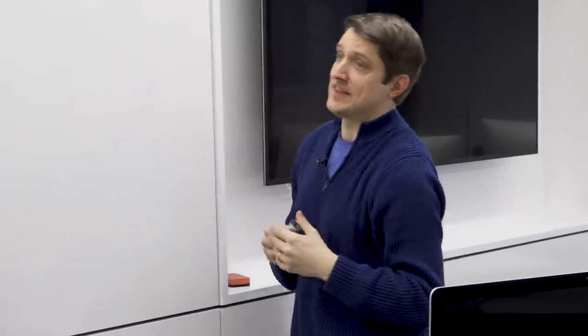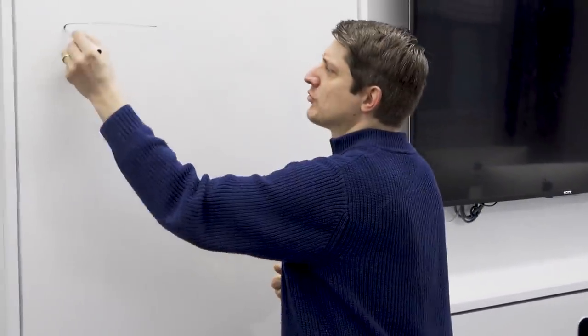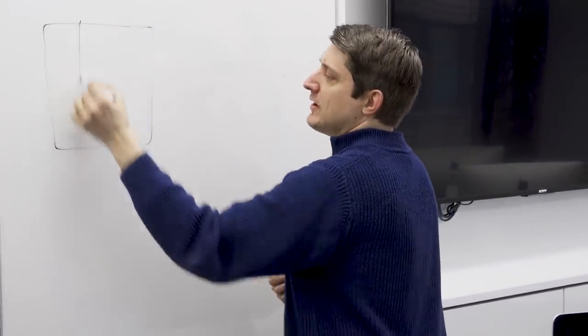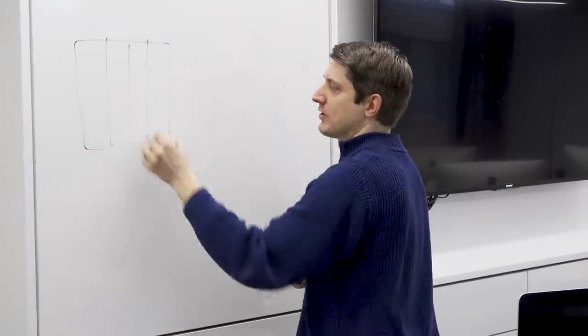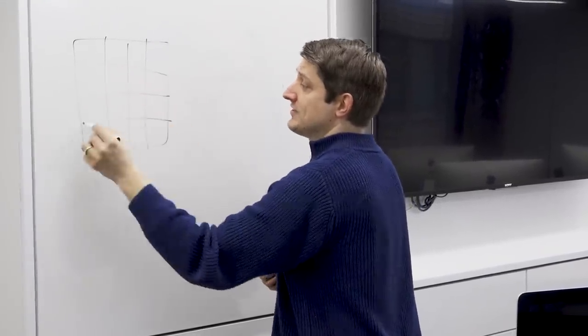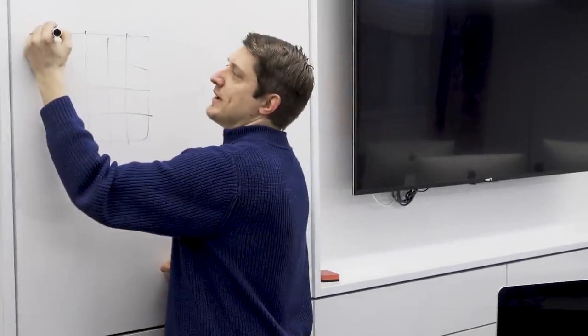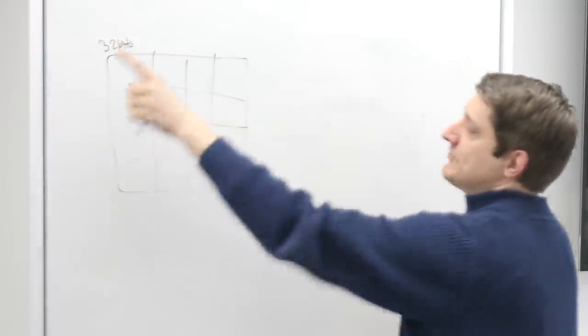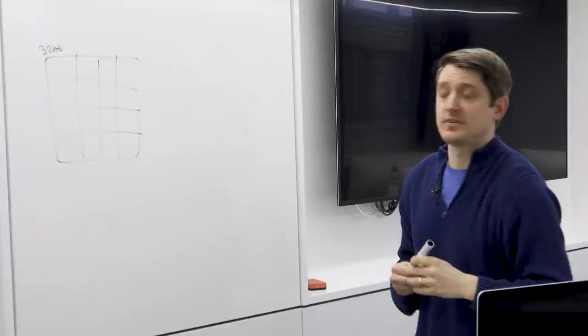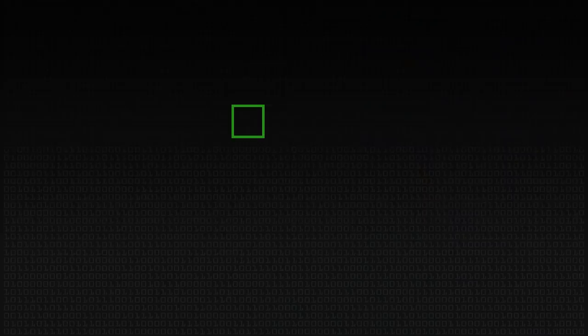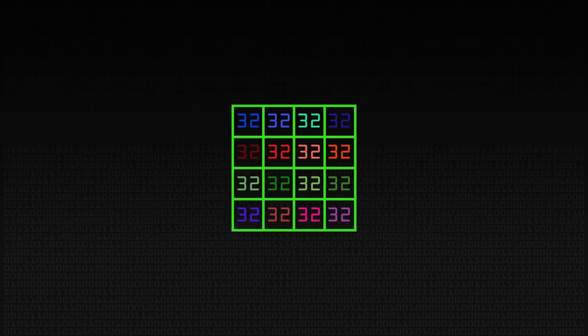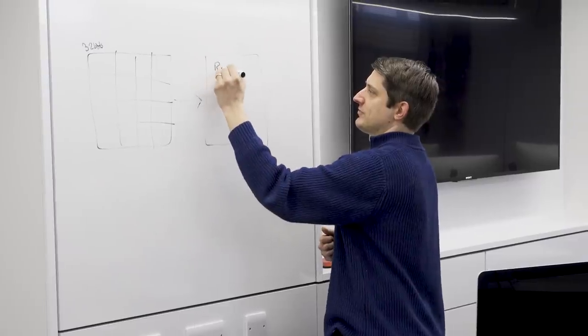ChaCha is a bit like a hash function, in the sense that it takes a block of data, and it mixes it up, and it uses that for its key stream. So we have a block, and we'll talk about what goes in there in a moment. But it looks a little bit like the AES block, except it's bigger. So this is a 4x4 block, and each of these is 32 bits. In total, this is 512 bits.